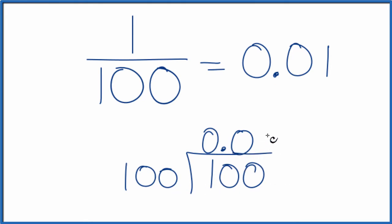100 does go into 100 one time. 1 times 100 gives us 100. So same answer we got before. The fraction 1 over 100 that's equal to 0.01.